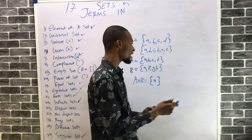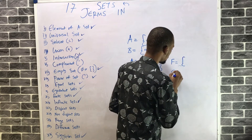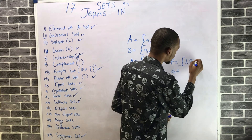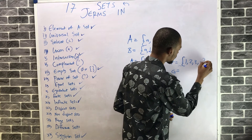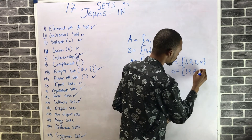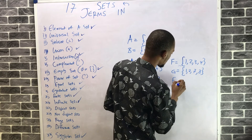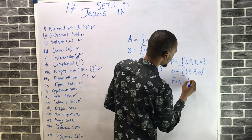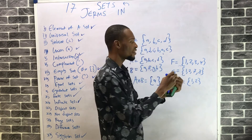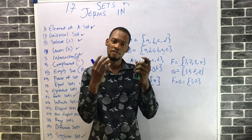If sets are numbers, for example, F intersection G is simply {1, 2} — the elements they share. That is the meaning of intersection of sets.